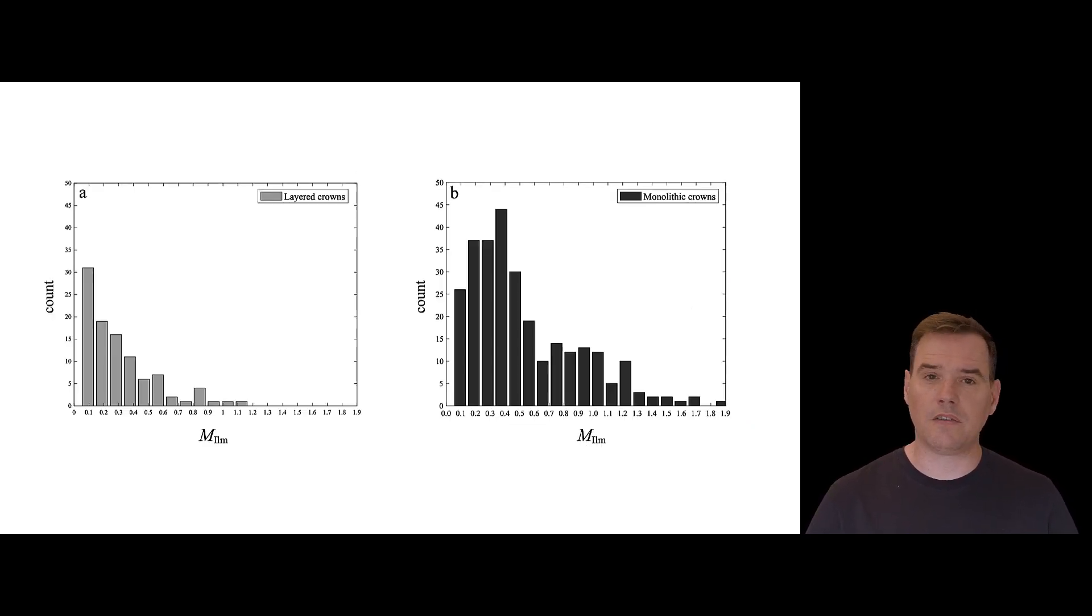This is quite interesting here. This is the frequency distribution of the metamerism index. And it shows quite nicely that the layered zirconia restorations on average had smaller incidence of metamerism and that the monolithic restorations on average were more metameric, but not to the point where it would really matter. That's just an interesting little fact.